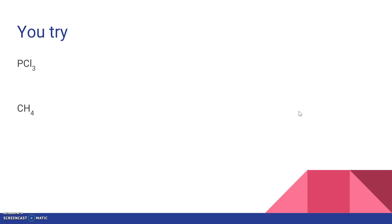Now you try it. For PCl3, determine the type of bonds and then the shape. And for CH4, determine the types of bonds and then the shape. Thanks for listening — see you in class.